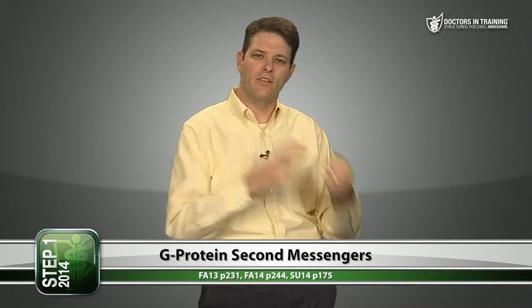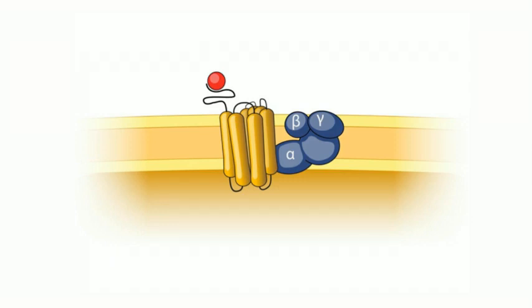Once a neurotransmitter like acetylcholine binds to a postsynaptic receptor, that receptor has to do something to send a signal downstream into the cell. One type of downstream signaling mechanism is called a G protein second messenger. This G protein receptor has a protein that passes through the plasma membrane seven times — it's referred to as a seven-pass transmembrane receptor, also known as a G protein-linked receptor because it activates the associated G protein.